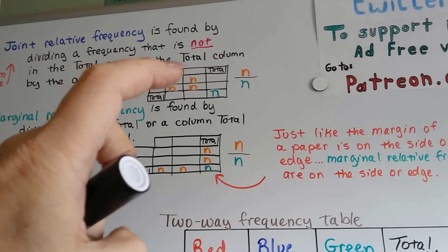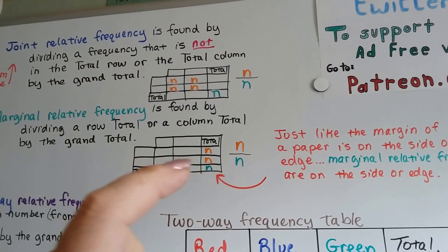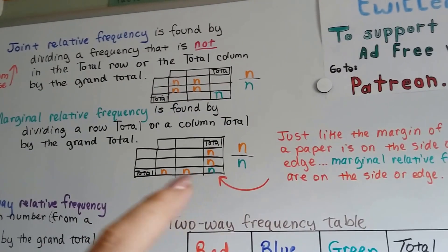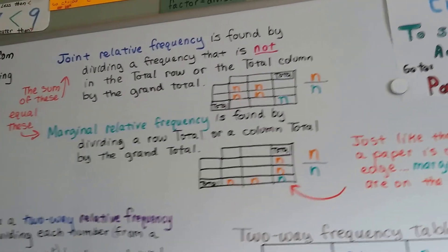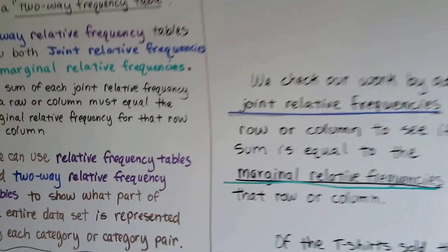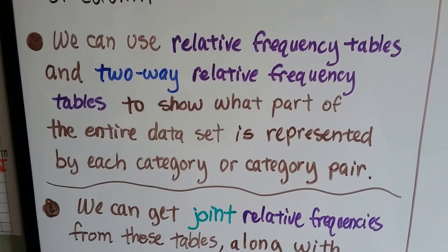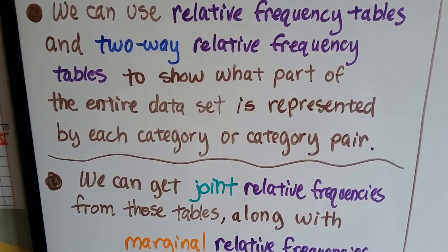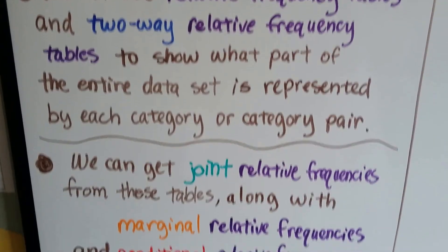Just remember: you divide the center ones by the grand total for joint relative frequency, and you divide the marginal ones - the ones along the margin - by the grand total for the marginal relative frequency. We can use relative frequency tables to show what part of the entire data set is represented by each category or category pair.